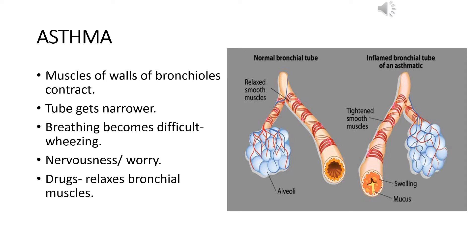The person faces a lot of difficulty in breathing and that difficult or pressurized breathing is called wheezing because it makes a particular peculiar sound. As the person is not able to breathe normally, he is also suffering from nervousness and worry. Asthma is treated by drugs that work on the smooth muscle of the bronchial wall, relaxing the muscles into their normal condition so that the tube gets distended and the passage for air movement gets wider again.